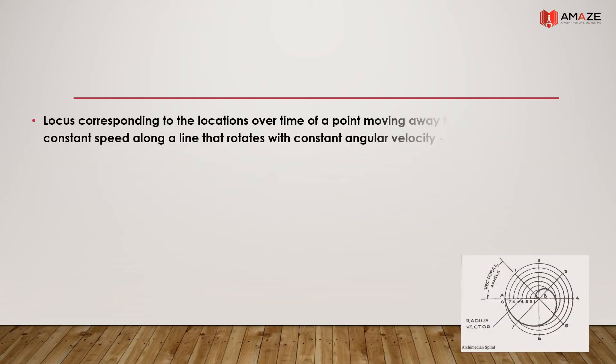The locus corresponding to the locations over time of a point moving away from a fixed point with constant speed along a line that rotates with constant angular velocity is called an Archimedean spiral.